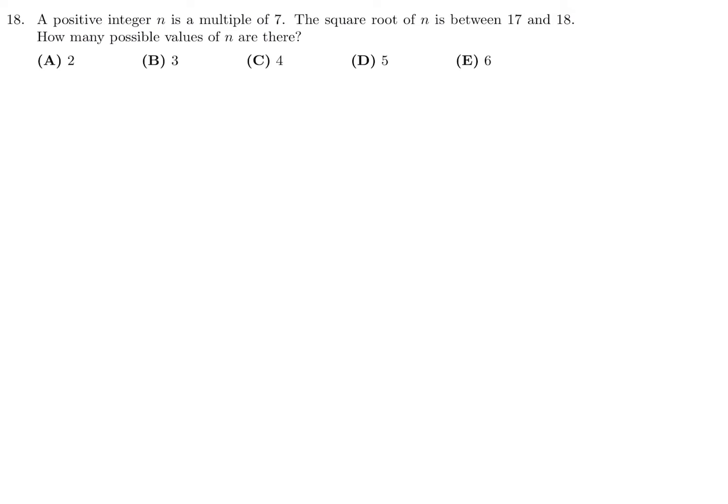N is a multiple of 7. The square root of N is between 17 and 18. How many possible values of N are there? N is equal to 7K, and then the square root of N is between 18 and 17. Square everything, and this becomes N, but then 17 squared is 289, and 18 squared is 324. How many multiples of 7 are there between 289 and 324?